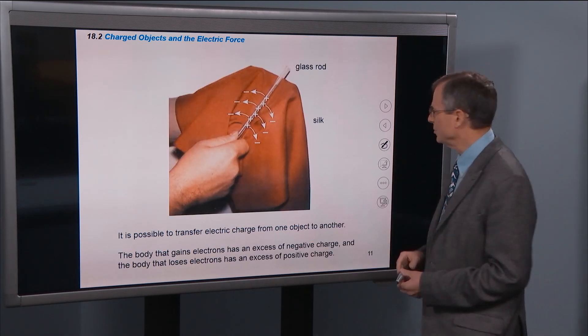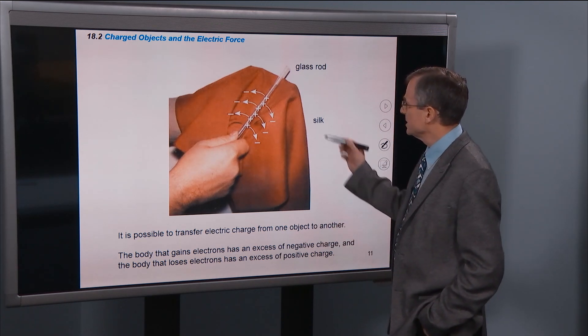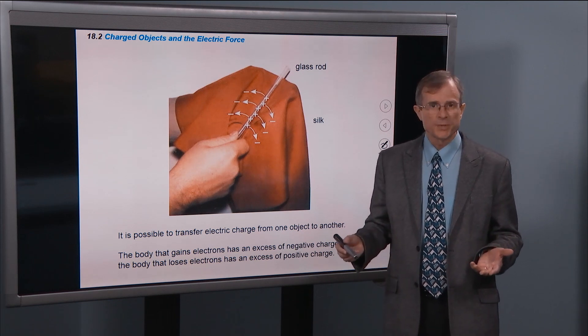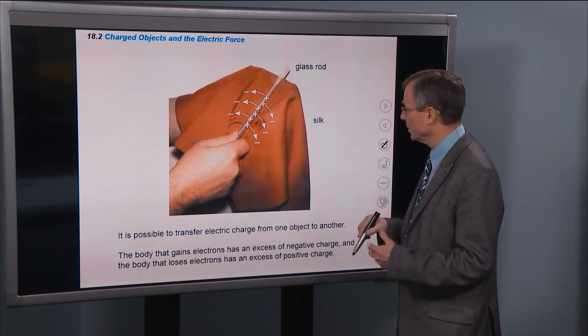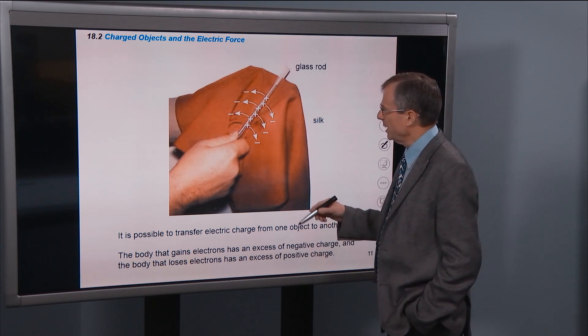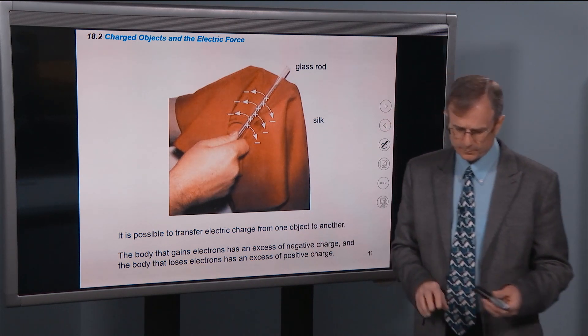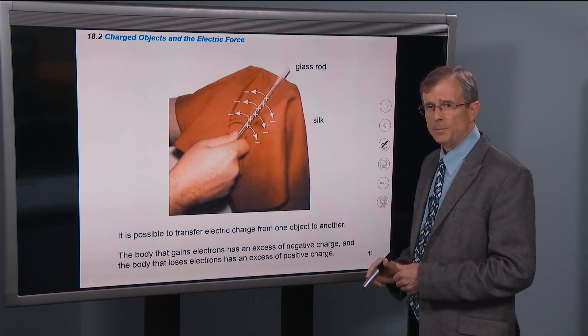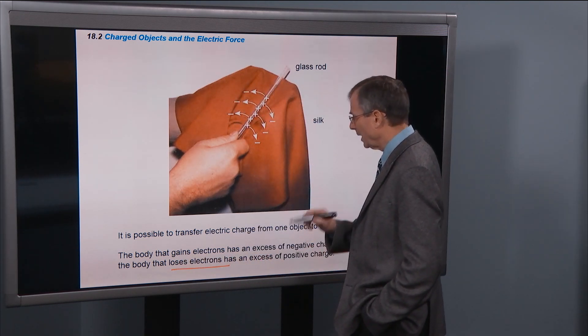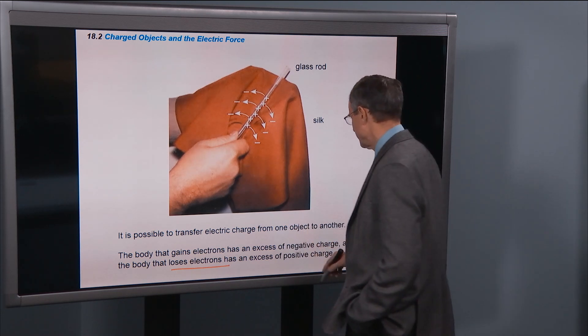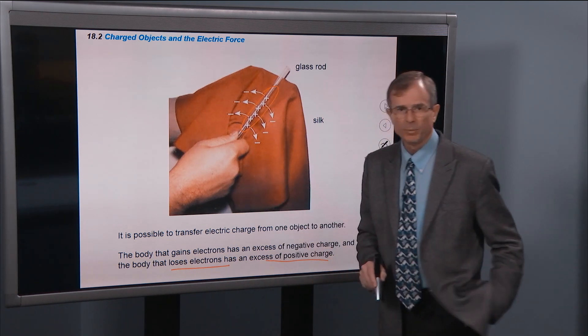Another way to transfer charge from one object to another is with silk and a glass rod. In the video we'll see a lucite rod, which is like a plexiglass type of thing. It works the same way, and in this case, you're rubbing the electrons off of the rod and they go into the silk. So in this case, the body is losing electrons. The glass rod loses electrons and ends up with an excess of positive charge, as you can see here, the plus signs.